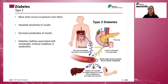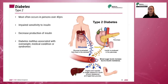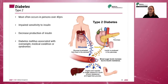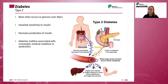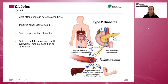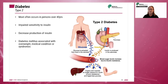Type 2 diabetes most often occurs in persons over 40 years. This is caused by impaired sensitivity to insulin or a decreased production of insulin. Diabetes mellitus is often associated with overweight, medical conditions, or syndromes.